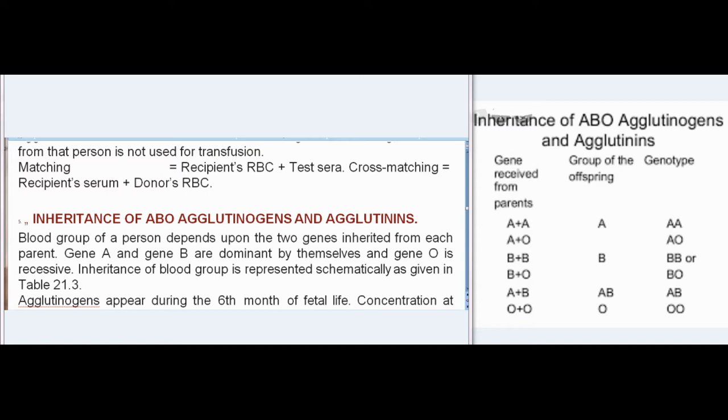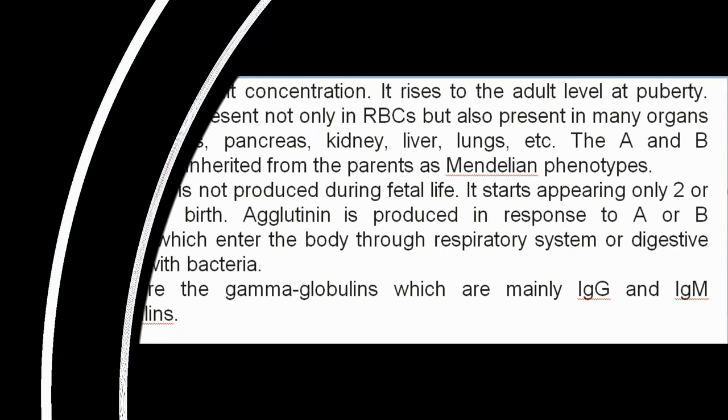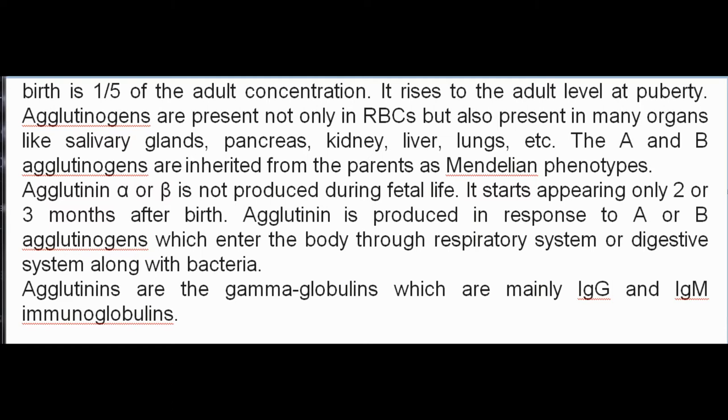Inheritance of ABO Agglutinogens and Agglutinins: A person's blood group depends on two genes inherited from each parent. Gene A and Gene B are dominant by themselves, while Gene O is recessive. Agglutinogens appear during the sixth month of fetal life; concentration at birth is one-fifth of adult concentration, rising to adult level at puberty. Agglutinogens are present not only in RBCs but also in many organs including salivary glands, pancreas, kidney, liver, and lungs. Agglutinins (alpha or beta) are not produced during fetal life; they start appearing two to three months after birth, produced in response to A or B agglutinogens entering the body through the respiratory or digestive system along with bacteria. Agglutinins are gamma globulins — mainly IgG and IgM immunoglobulins.